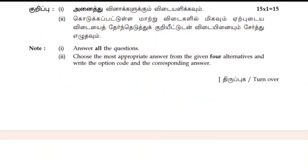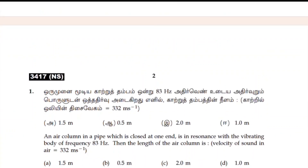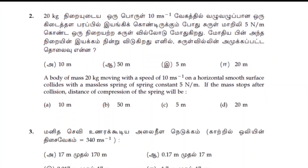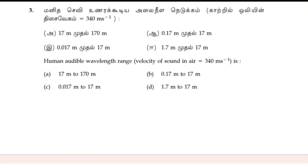First, we will talk about one word, and that one word is very important. In two marks, there is an option — A and B will be called. You will receive two applications. You can find Type A and Type B.